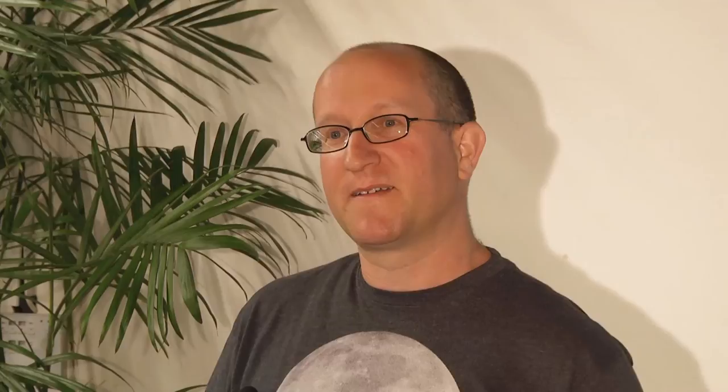A question was raised about the 9-millisecond verification time versus 3-minute creation time — certainly not intentional; we would like zero milliseconds for both. What takes a long time is generating a zero-knowledge proof. Verifying it, fortunately, is very efficient at 9 milliseconds. You could hope for more efficiency, but that's where we are.